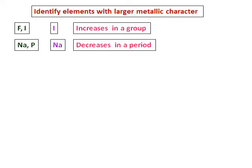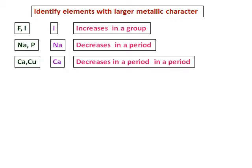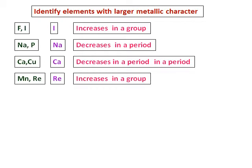Between calcium and copper, they belong to the same period, so calcium will be the answer as metallic character decreases in a period. Between manganese and rhenium (Re), rhenium will have higher metallic character because metallic character increases in a group.